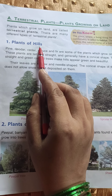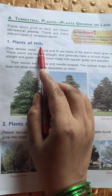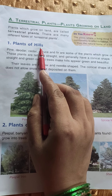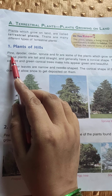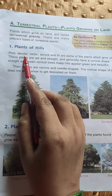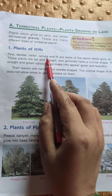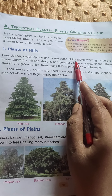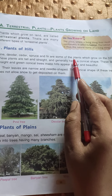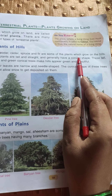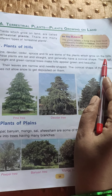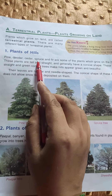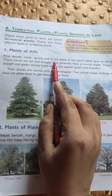A hill is a piece of land which extends above the surroundings. Pine, deodar, cedar, spruce, and fir are some of the plants which grow on the hills. These are the plants of hilly areas.